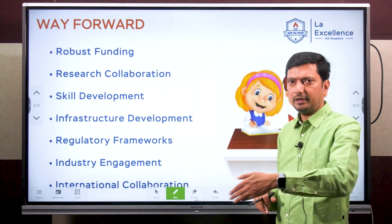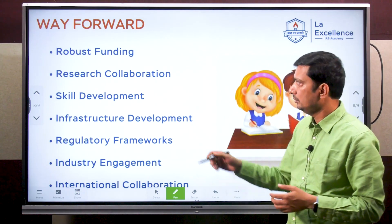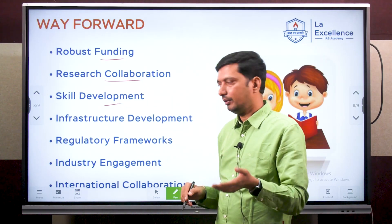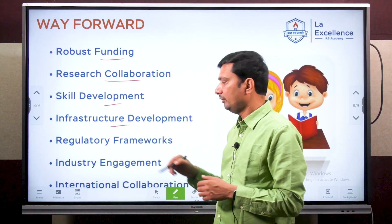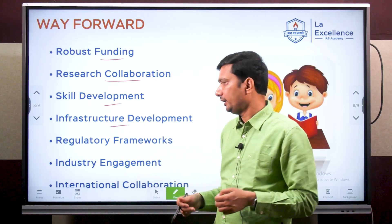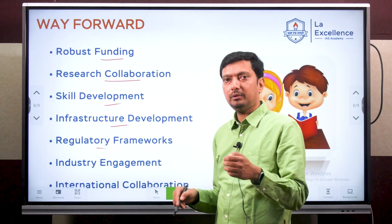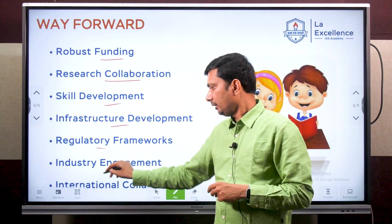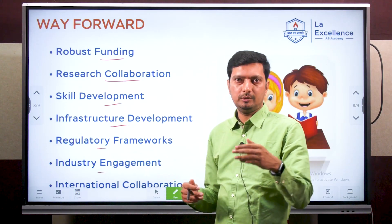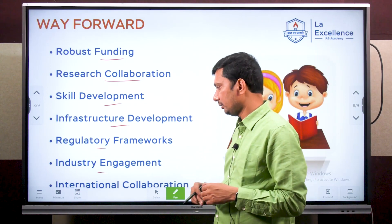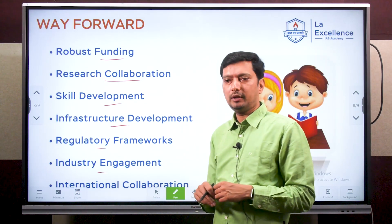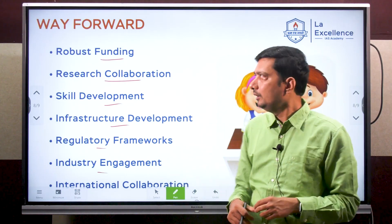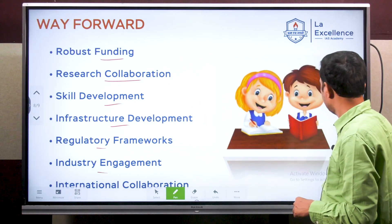We have identified the challenges and know what we need to do — better funding, better research collaboration, skill development, and better infrastructure for people to create these technologies. At the same time, we need to understand the issues that would pop up, so a regulatory framework is needed. Including industry along with research institutions and academia is one of the objectives, as is international and academic collaborations where people can help us go forward and build together. These are the things we can follow to make this a reality.